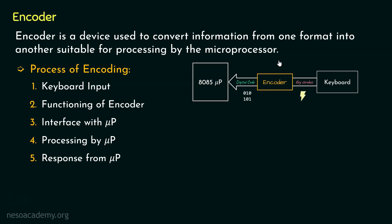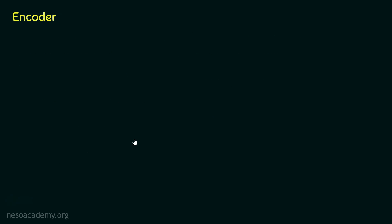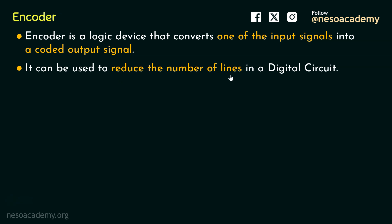So clearly, the presence of the encoder allows for the seamless interaction between the user and the microprocessor based systems. So from this illustration, I believe it is now clear to you that why encoder is a basic interfacing component of the 8085 microprocessor. Now coming to the formal definition of the encoder, it is a logic device that converts one of the input signals into a coded output signal. Encoders in a digital system are used to reduce the number of lines.